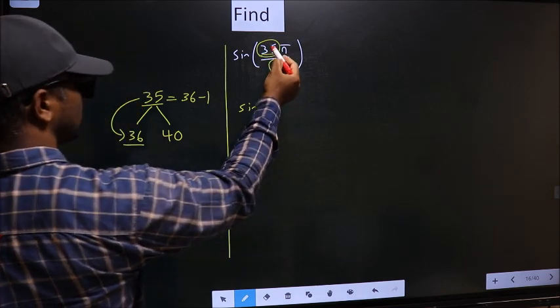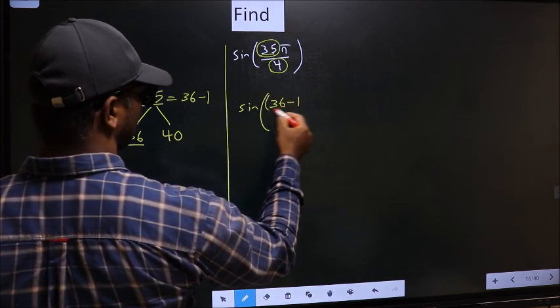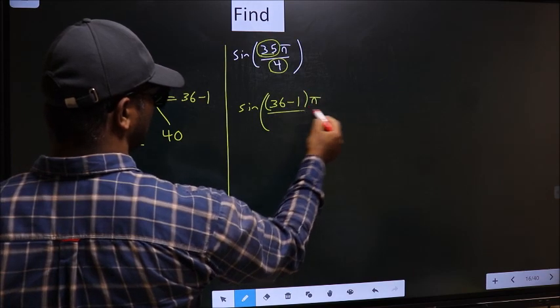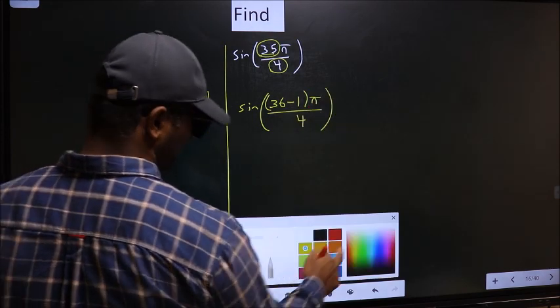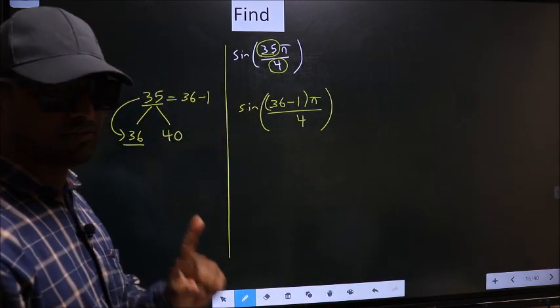In place of 35, now you should write 36 minus 1, pi by 4. This is your step 1.